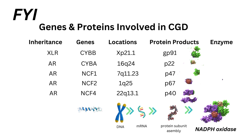For your information only, CGD is actually caused by several mutations in various locations of our chromosomes, as shown in this table cited in Rodak Hematology. There are X-linked and autosomal recessive genes that code for several protein products that assemble and form NADPH oxidase.